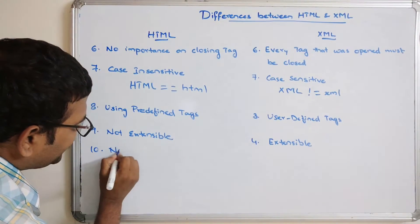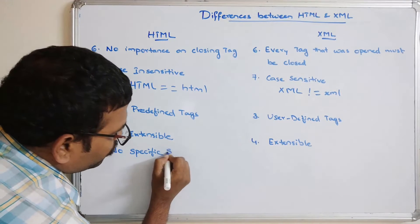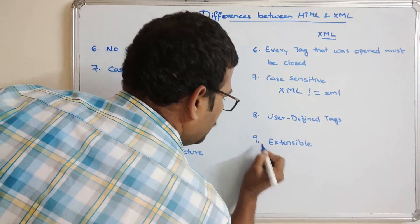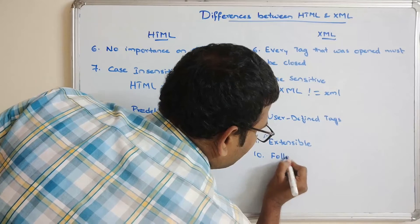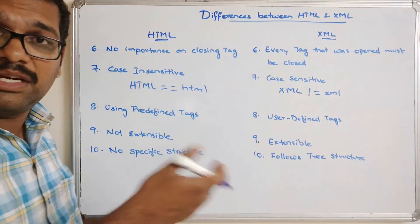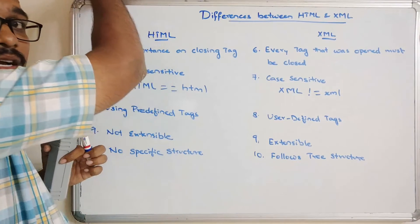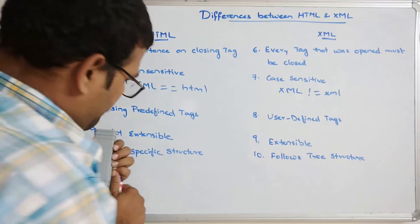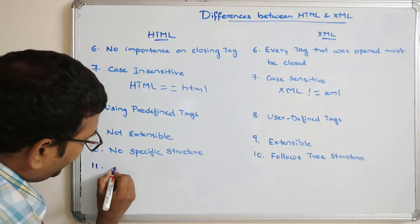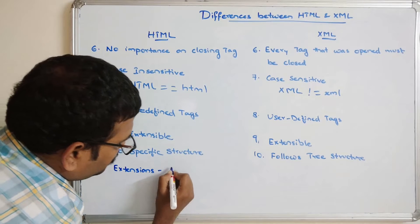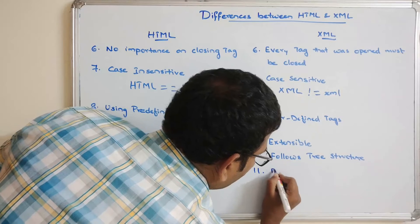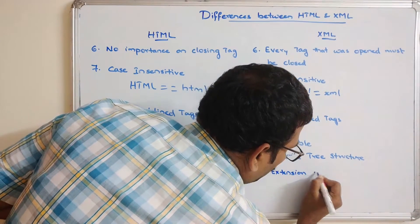In HTML there is no specific structure to display the data. But XML follows a tree structure — that means a hierarchical structure. The file extensions are '.htm' or '.html' for HTML, and '.xml' for XML.